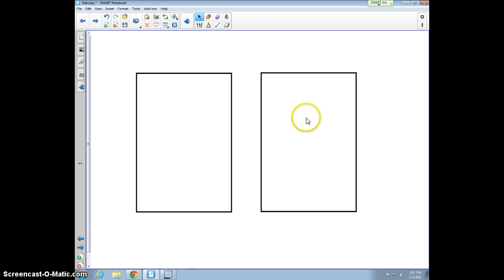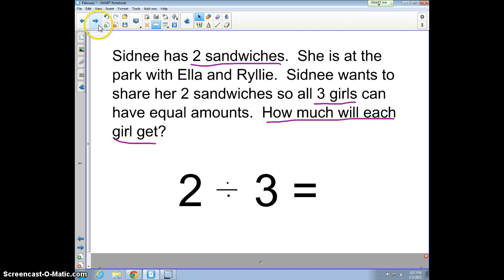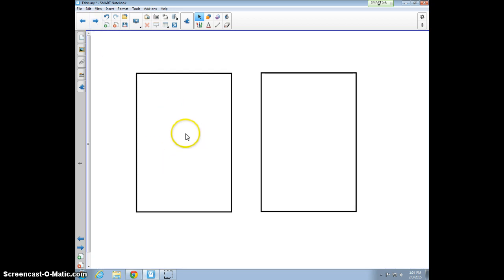So if we look visually at what this is going to look like, I have here two sandwiches. So here's Sydney's sandwiches. Remember, she has two sandwiches. That's her dividend. And because we have three girls that need to share it equally, we're going to take this sandwich and we're going to divide it into three equal parts.